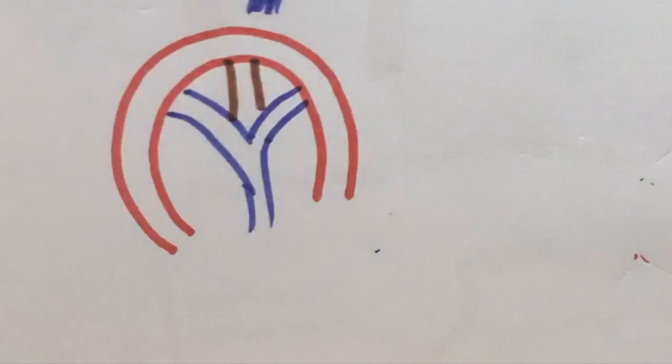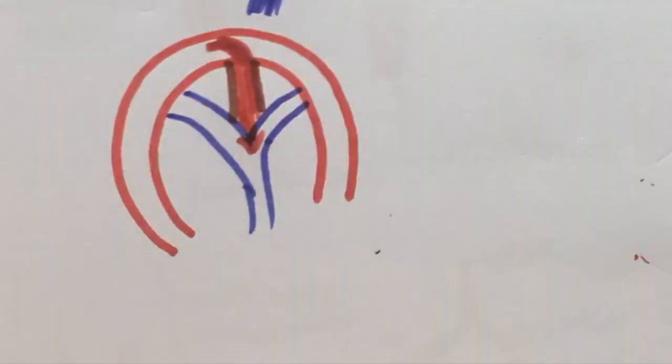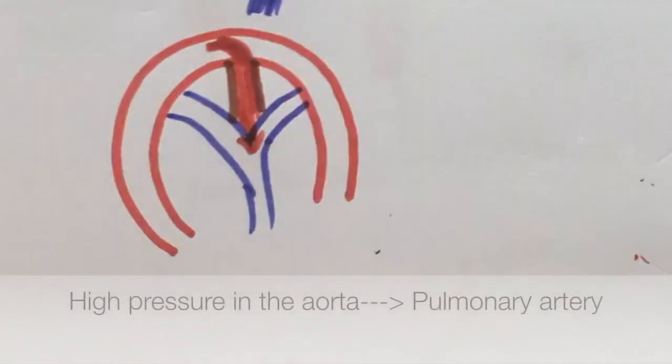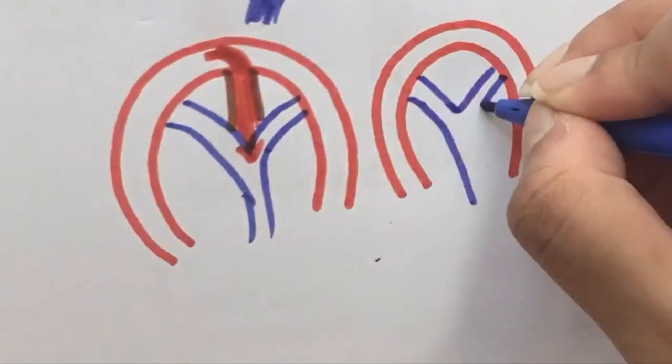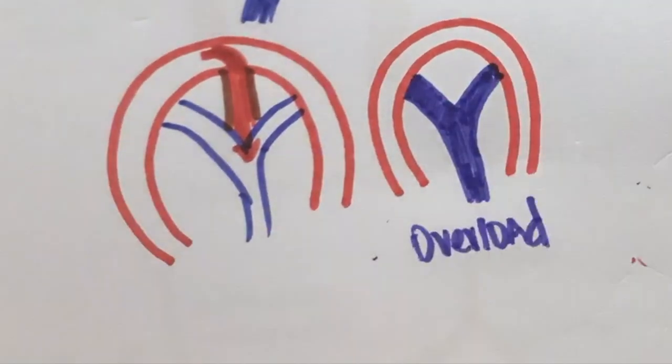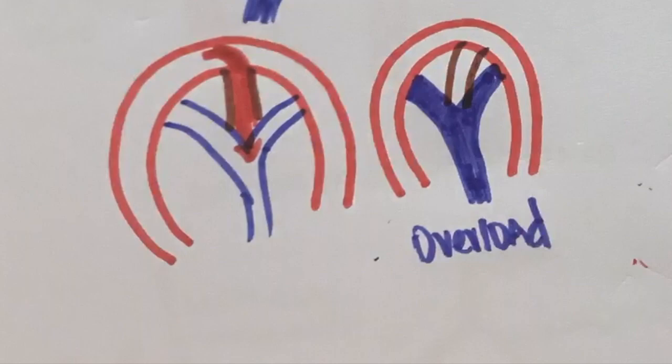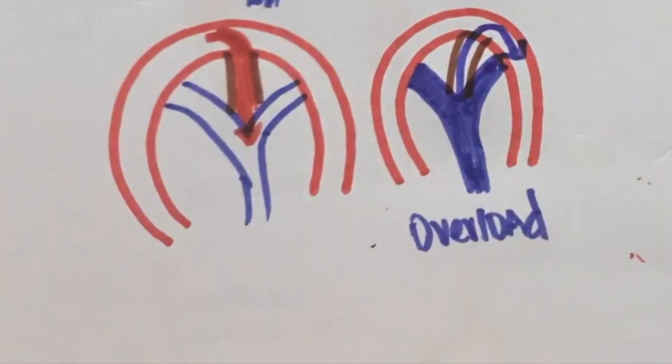In such cases, blood can flow from the aorta to the pulmonary artery. This is because the pressure in the aorta is higher than that in the pulmonary artery. But if this lasts for a very long time, there will be a fluid overload in the pulmonary arteries and the right heart. So the pressure will increase here, resulting in a reversal of the shunt.